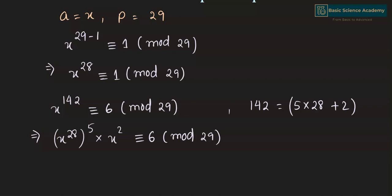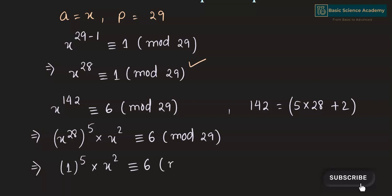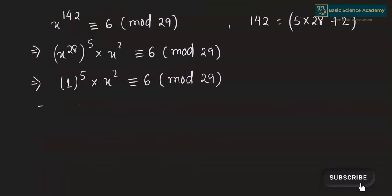We have x to the power of 28 is congruent to 1 mod 29. Hence, we can replace x to the power of 28 by 1, so 1 to the power of 5 multiplied by x squared is congruent to 6 mod 29. This simplifies to x squared is congruent to 6 mod 29.